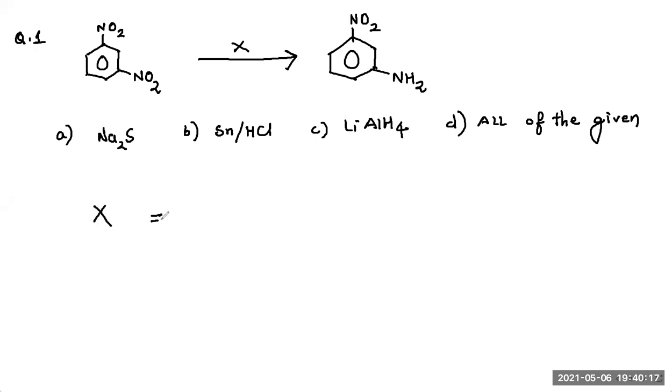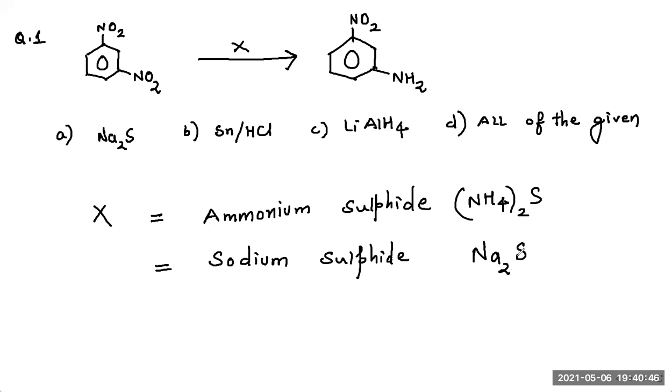Now remember X can either be ammonium sulfide or it can be sodium sulfide. Ammonium sulfide will be (NH4)2S and sodium sulfide will be Na2S. These two reagents, ammonium sulfide and sodium sulfide, are selective reducing agents.